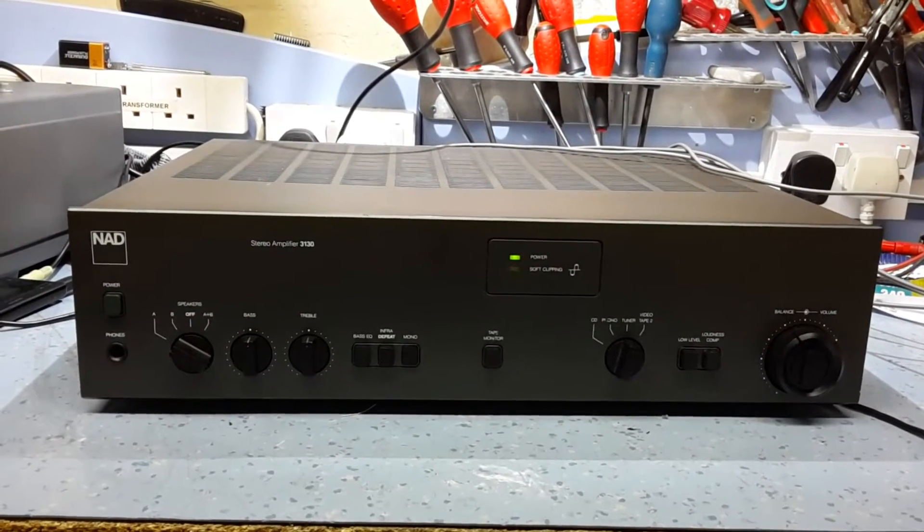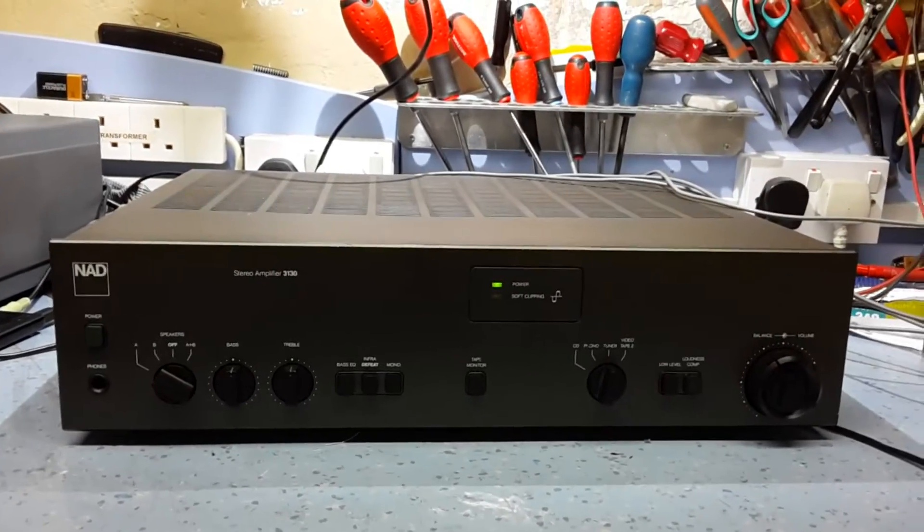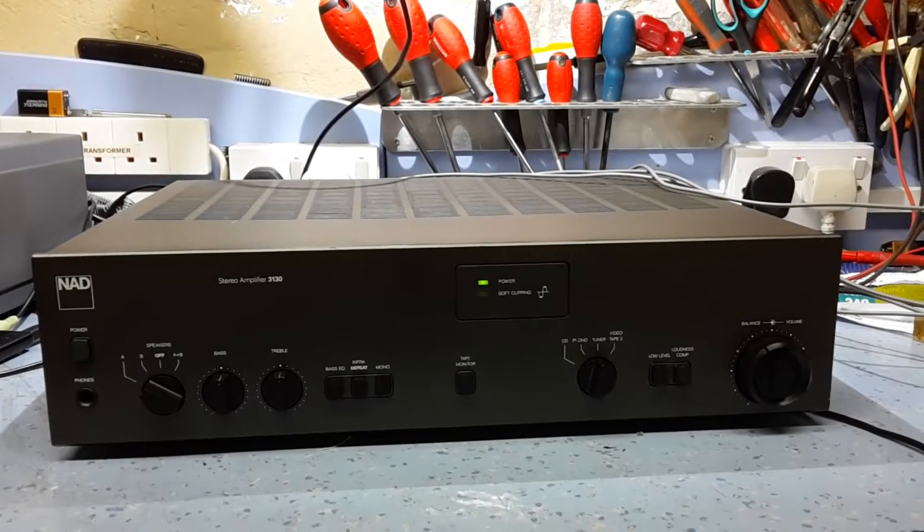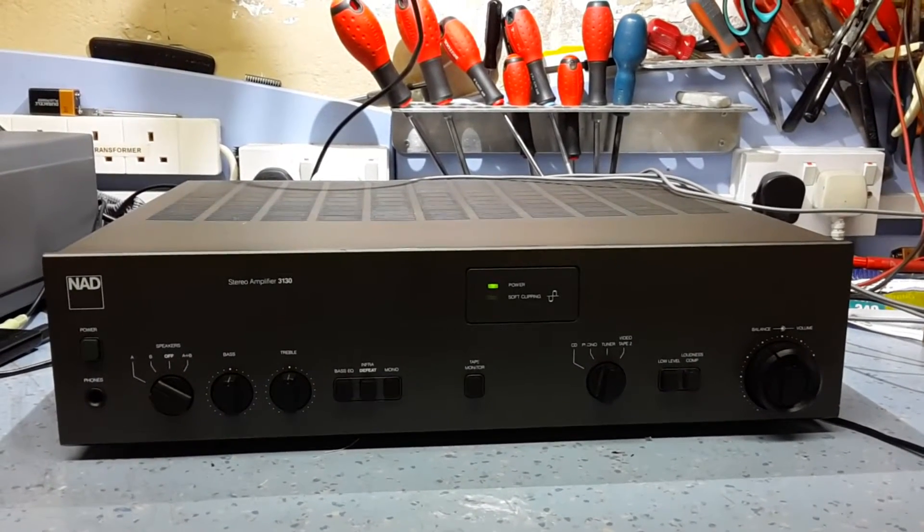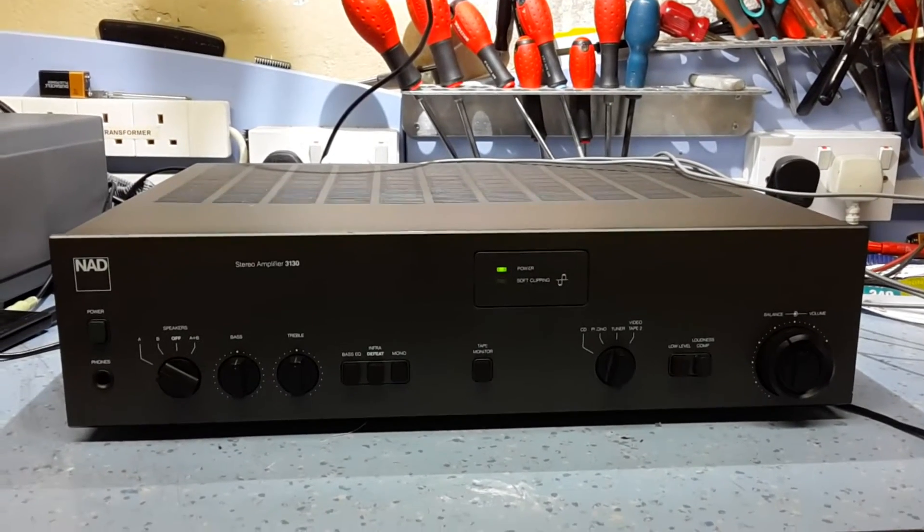One of the first popular amplifiers that NAD did was the NAD 3020, and one of the features it boasted was this soft clipping option that you could enable and disable from the amplifier if you wanted it.